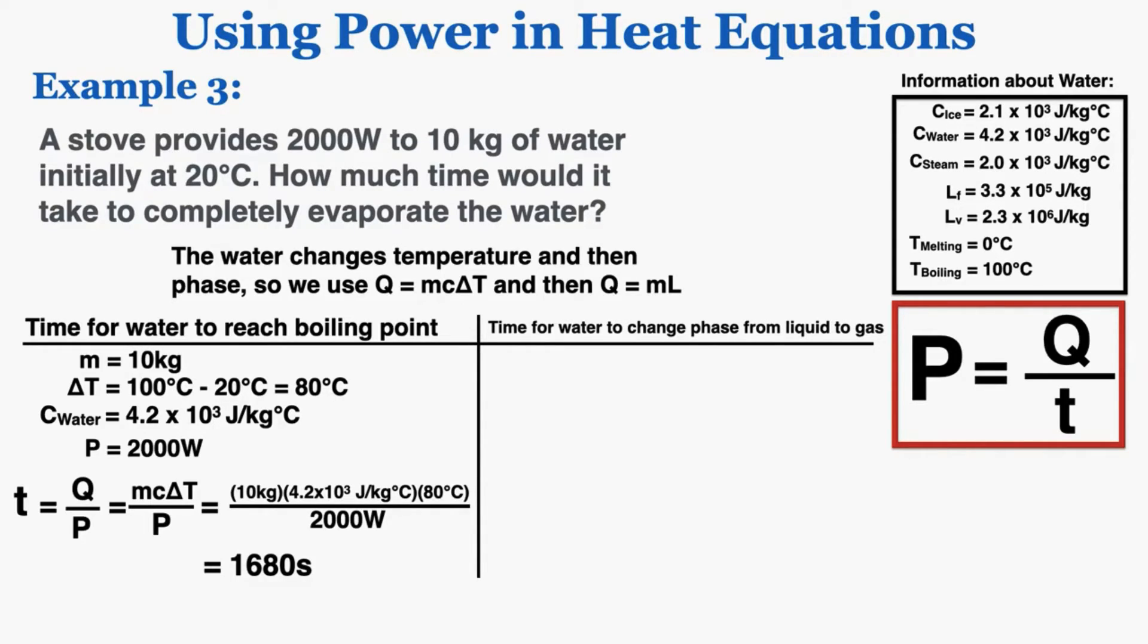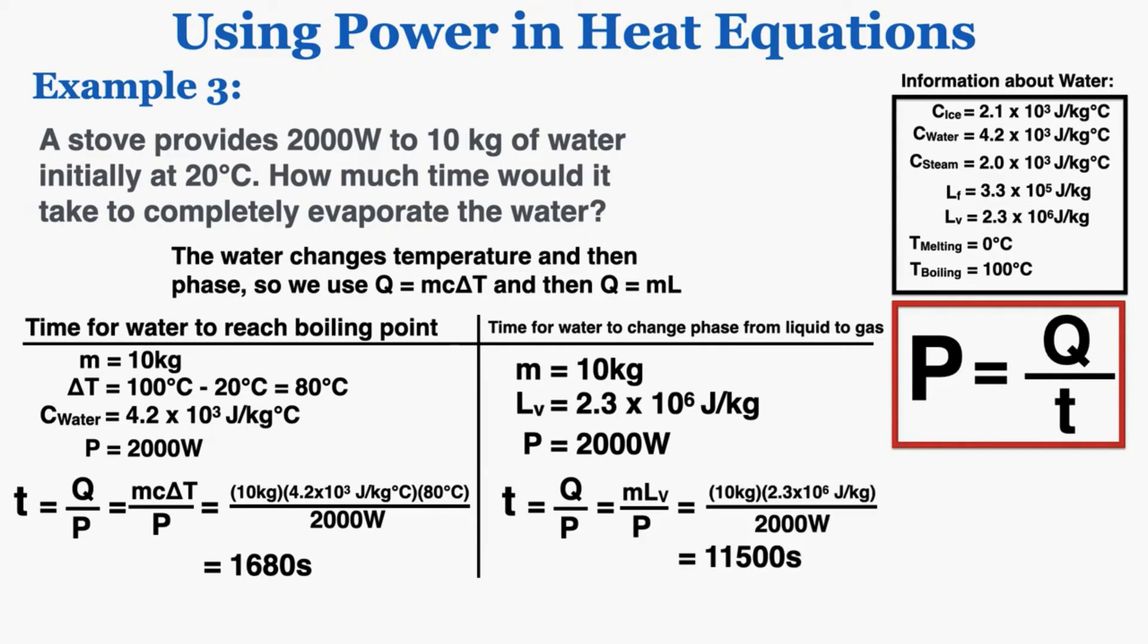Now I need to find the time required for the water to change its phase. The mass is 10 kilograms. I know that we're working with the latent heat of vaporization because we're going from liquid to gas, so that's going to be 2.3 times 10 to the sixth joules per kilogram. The power is 2,000 watts. So again, plugging this in knowing that Q is equal to M times the latent heat of vaporization, plugging that in gets me 11,500 seconds.